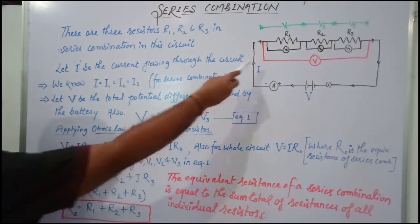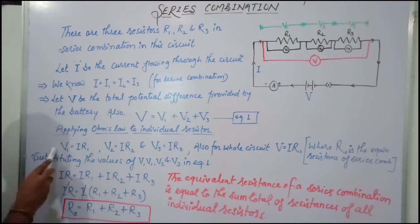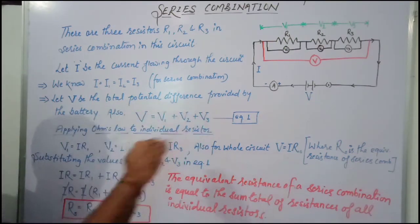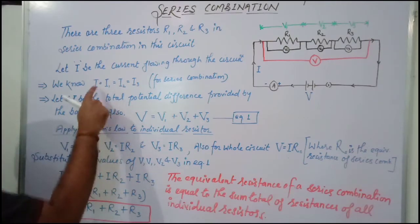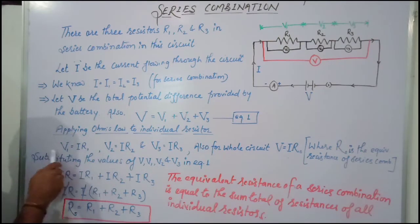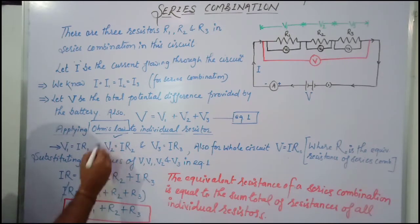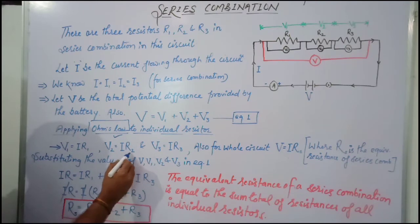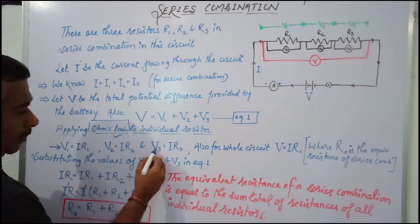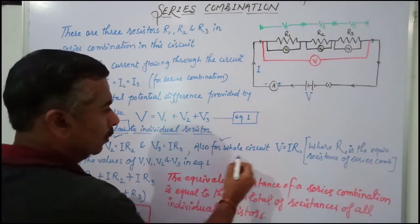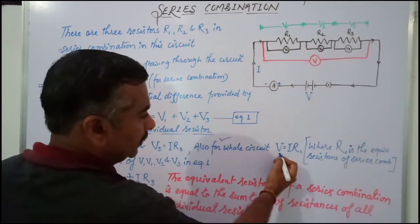Applying Ohm's Law to the individual resistors: the potential drop across the first resistor V1 equals I·R1, since the same current I flows through all. Similarly, the potential drop across the second resistor V2 equals I·R2, and the potential drop across the third resistor V3 equals I·R3.